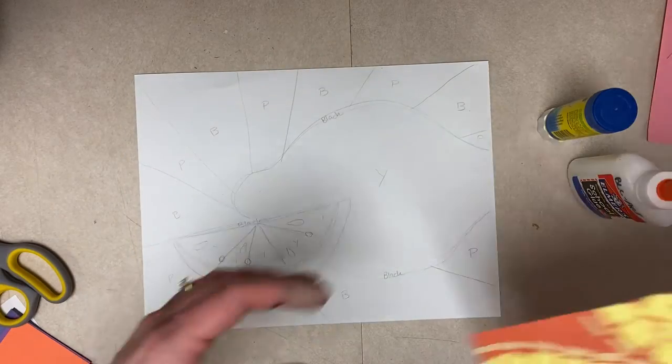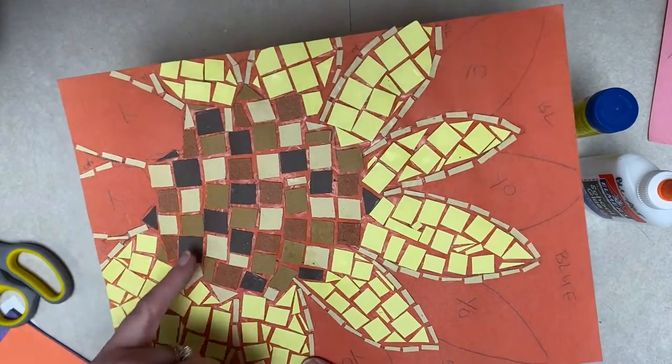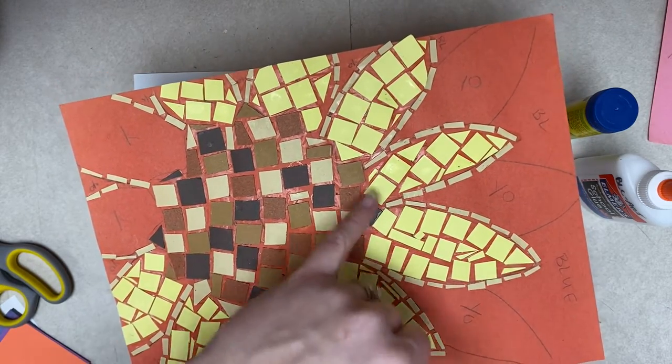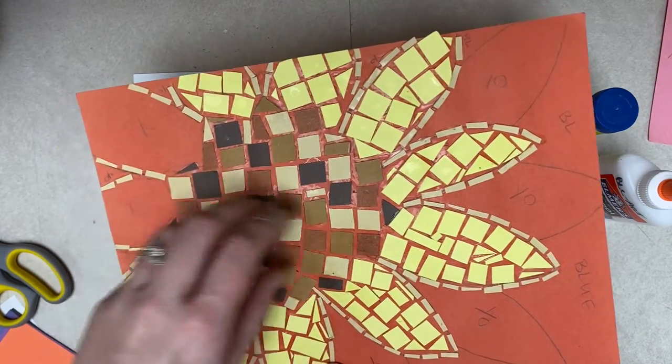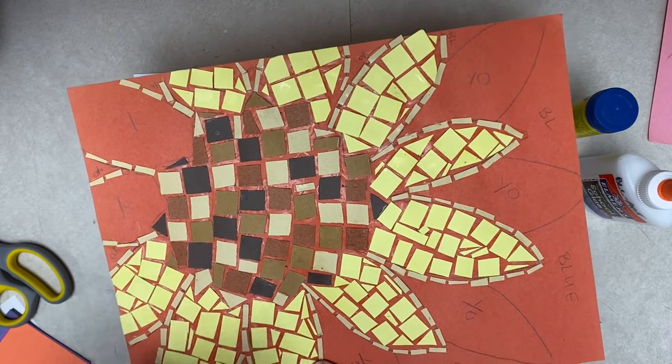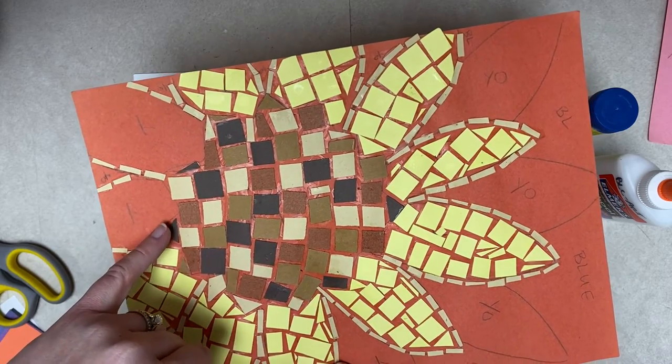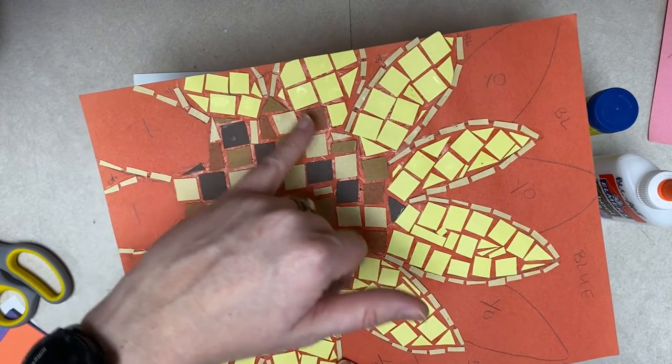Another thing that you can do - this is another in-progress project - instead of just doing a solid brown, I did a modpodge of random kinds of brown, so light brown, dark brown, medium brown, and so forth.